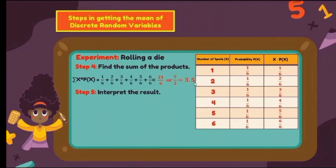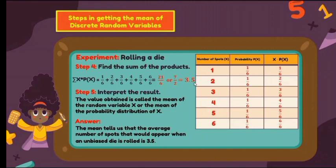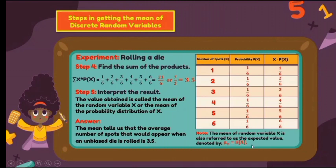Step 5: interpret the result. The value is called the mean of the random variable X, or the mean of the probability distribution of X. The mean tells us the average number of spots that would appear when an unbiased die is rolled is 3.5. Since 3.5 is not an actual face value, if we continue performing the experiment, there is a tendency we will arrive at an average of 3.5 — meaning either 3 or 4 will most often appear. Note: the mean of X is also referred to as the expected value, denoted E(X).